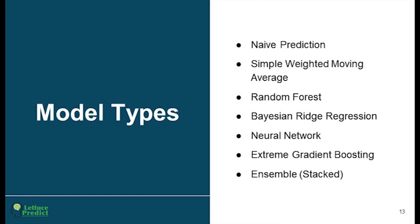We also converted items and stores into dummy variables — a binary value of zero or one indicating the absence or presence of a categorical variable. For example, with 4,000 items, each item would be given its own category, represented with a one for that item. We also did a log transformation on the dependent variable unit cost, as one prerequisite for some regression model techniques is that the dependent variable resembles a normal distribution. In total, we ran seven models.